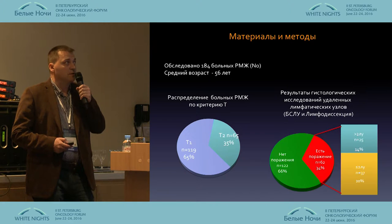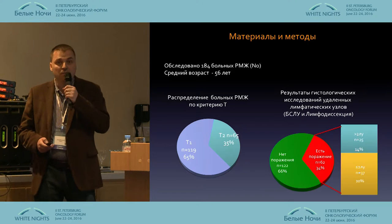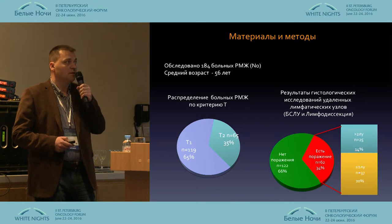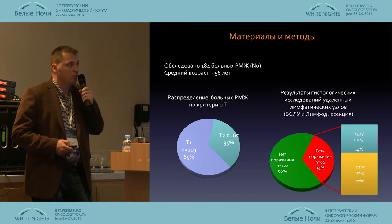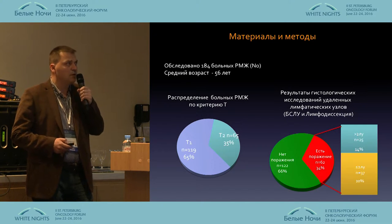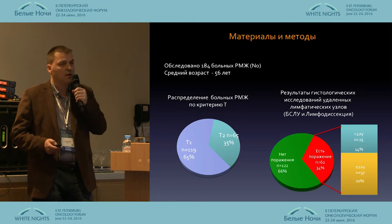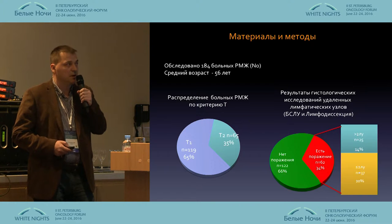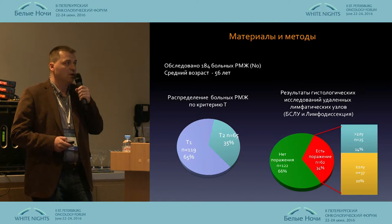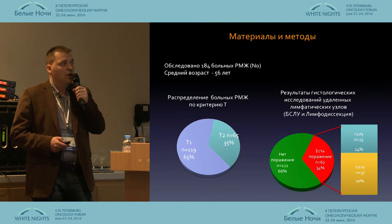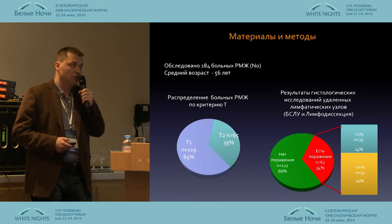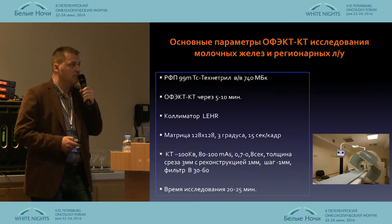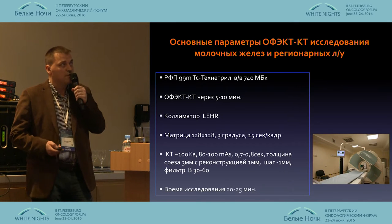We looked at the informational value of SPECT/CT with breast cancer. We examined 184 patients with mean age 56 years. You see the distribution based on stages, mainly first stage up to 20 millimeter tumor. The results of histological tests were either lymphodissection, biopsy, or sentinel node biopsy. More than two lymph nodes were affected in 14%, and fewer in 32% of patients.